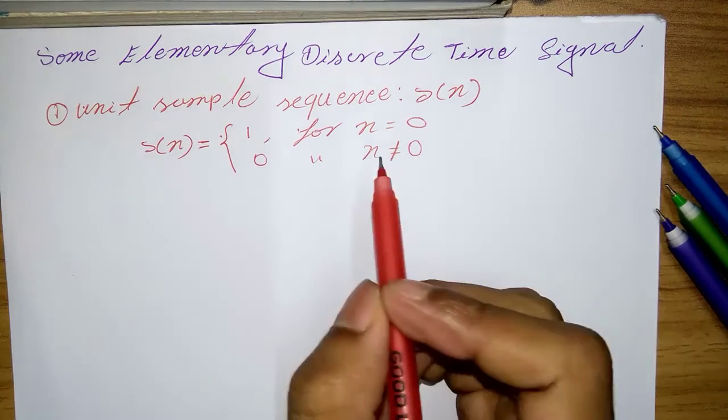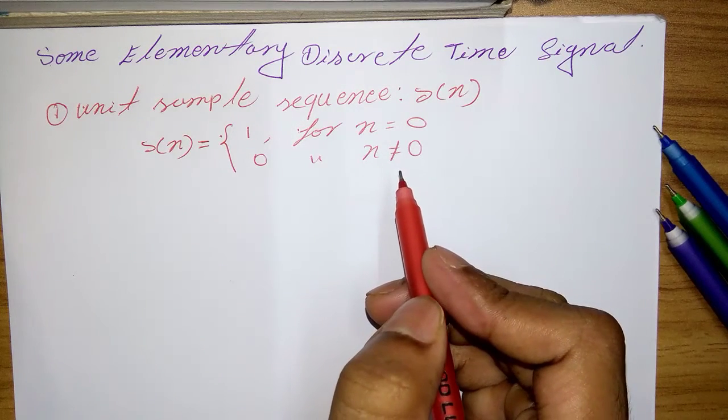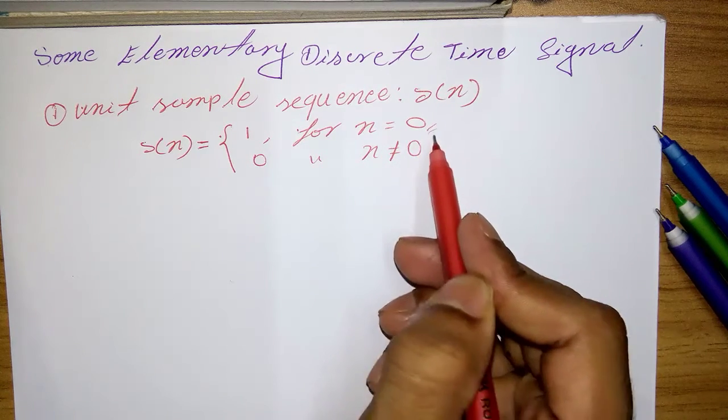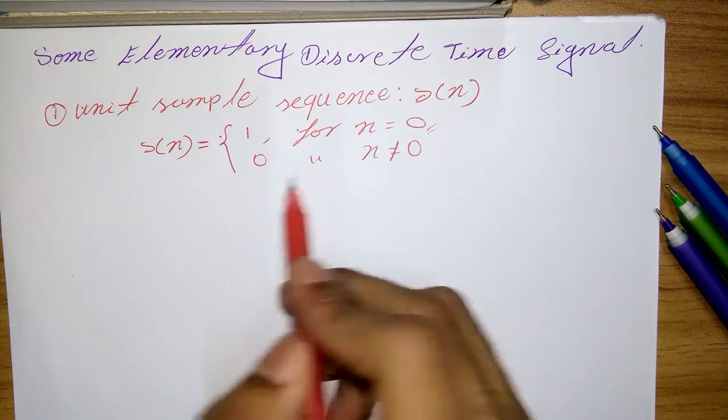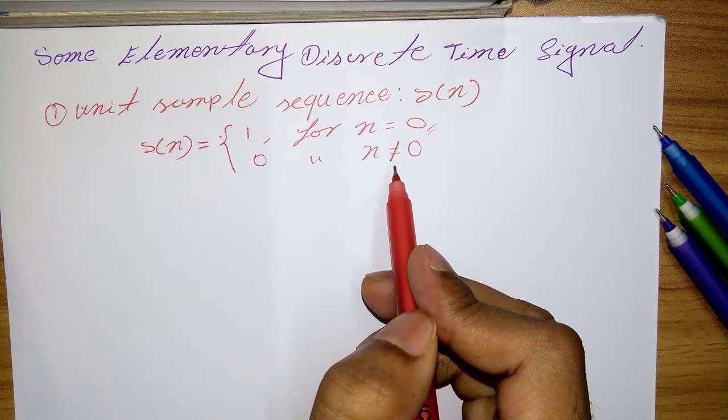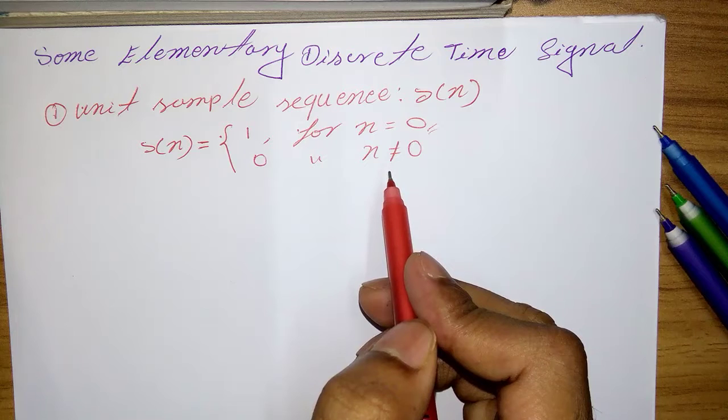So in words, the unit sample sequence is a signal that is 0 everywhere except at n equal 0, where its value is unity.